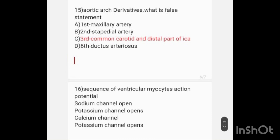Sequence of ventricular myocyte action potential: sodium channel opens, then potassium channel opens (transient), then calcium channel opens, then potassium channel opens again. The second potassium channel opening is a transient potassium channel.